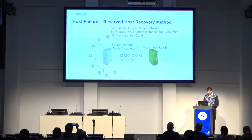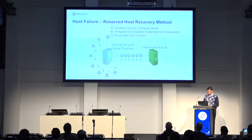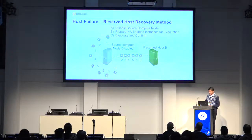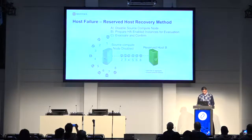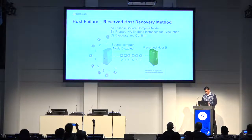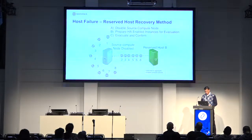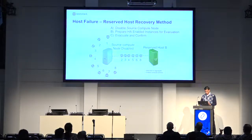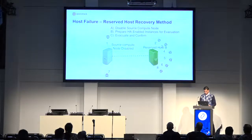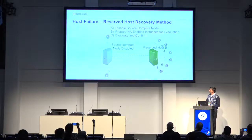The third task is 'evacuate and confirm'. In this task it will start evacuating the instances in batches. Based on all three config options, here I've depicted that only certain instances will be evacuated. During evacuation, if any of the source compute hosts are part of a host aggregate, it will first add the reserved host to the host aggregate. After all instances are evacuated, it will enable the compute service on the reserved compute host.